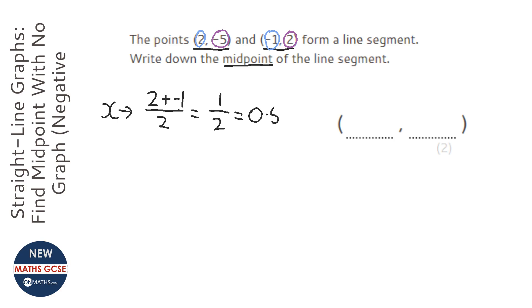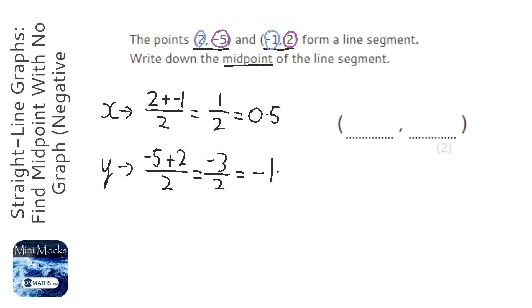For the y's, we've got -5 plus 2 over 2. -5 plus 2 is -3, over 2, which is -1.5. So the coordinates are 0.5, -1.5.